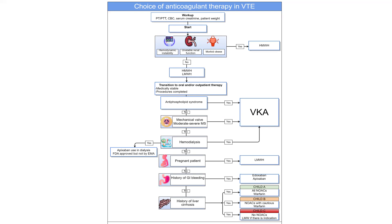The choice of oral anticoagulant depends on important comorbidities that may exist in the patient. If the patient has antiphospholipid syndrome, a mechanical heart valve, or moderate to severe mitral stenosis, the only suitable oral anticoagulant is a vitamin K antagonist such as warfarin.